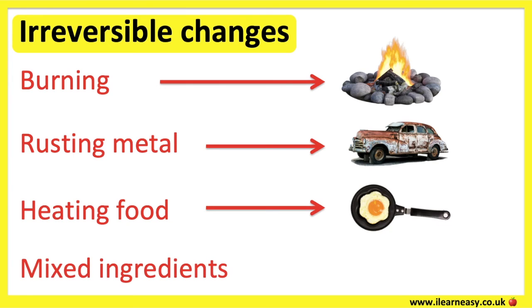Mixed ingredients: for example, if you're making bread, you'll have to mix all of the ingredients to make dough. Once the ingredients are all mixed together, they can't be separated, as the ingredients have permanently changed.